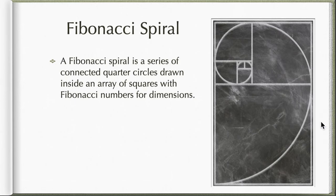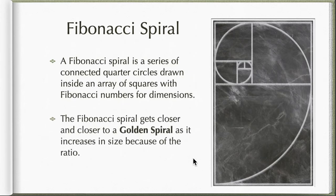This Fibonacci spiral gets closer and closer to what we call the golden spiral. This golden spiral pretty much resembles our golden ratio. Take note in a previous video we have talked about the golden ratio, where it came from the numbers, the sequence of numbers of the Fibonacci sequence as it increases in size because of the ratio.